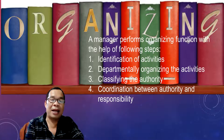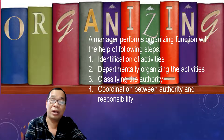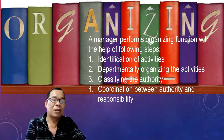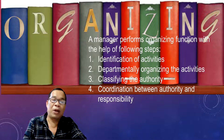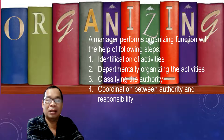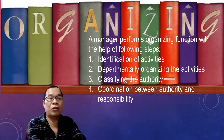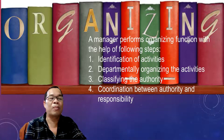After departmentalization, there is classifying the authority. Once the departments are made, the manager classifies the powers and their extent to the managers. This activity is about giving a rank order to manager positions — this is called hierarchy. Classifying authority is done by way of ranking. Then you have to coordinate. There is coordination between authority and responsibility. Relationships are established among various groups to enable smooth interaction toward the achievement of organizational goals.